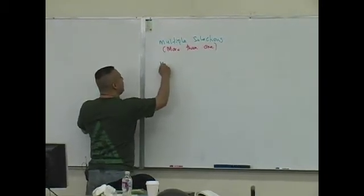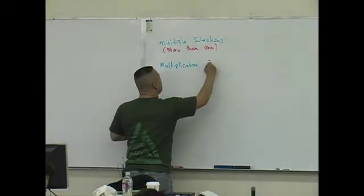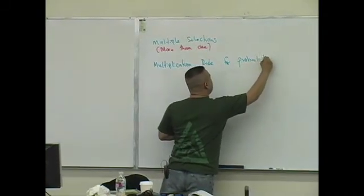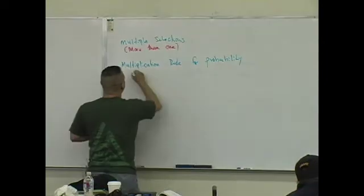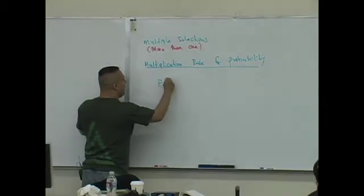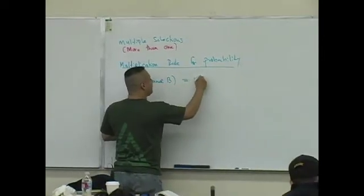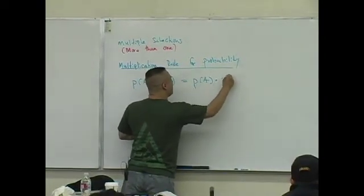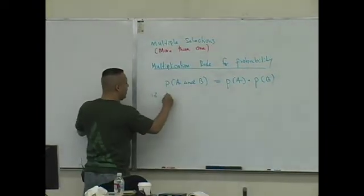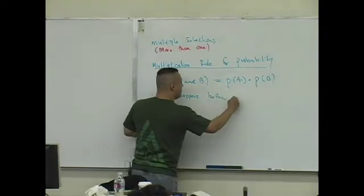So in other words, I'm going to give you what's known as the Multiplication Principle, or Multiplication Rule for Probability. And here it is. That is the Probability of A and B is equal to the Probability of A times the Probability of B, if A happens before B.